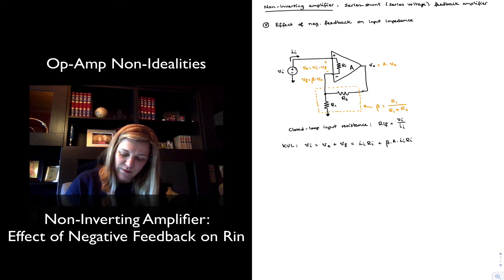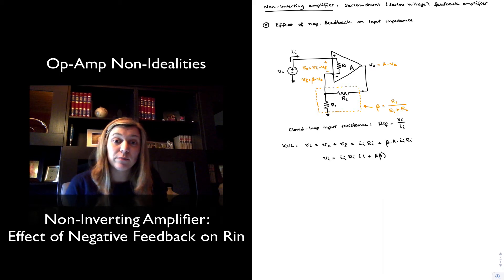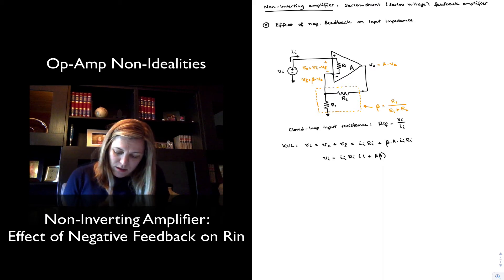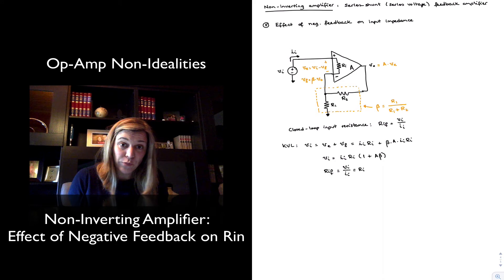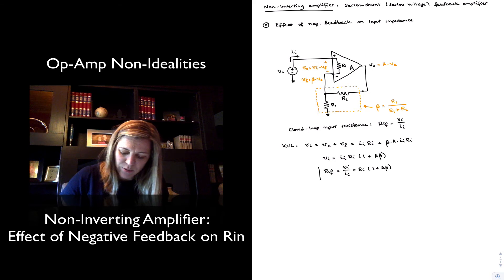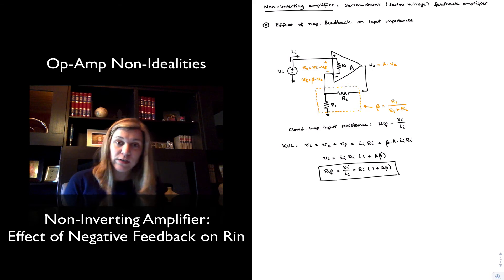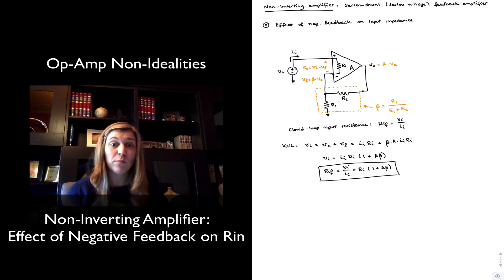And so from here I can factor out ii and end up with vi is equal to ii ri times 1 plus a times beta. So notice again that a times beta, that closed loop gain. And now I can basically just calculate my rif from there. It's vi over ii, which is ri, the input resistance of the op amp, times 1 plus a times beta. So connecting the op amp in this negative feedback configuration has increased the input resistance by a factor of 1 plus a times beta.